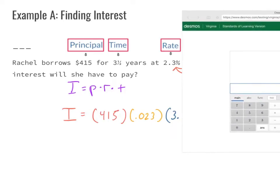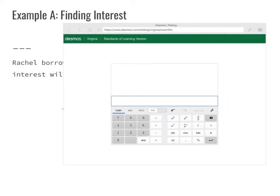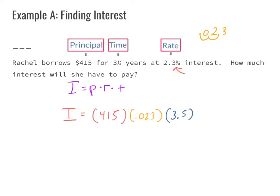We can use a calculator. We plug in all our numbers using parentheses: (415)(0.023)(3.5). When we multiply that we get 33.4075. It's important to notice we have four decimal places, but in our system of money we only have two, so we're going to need to do some rounding.